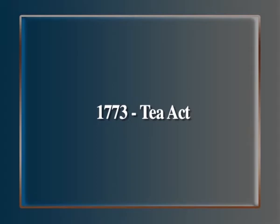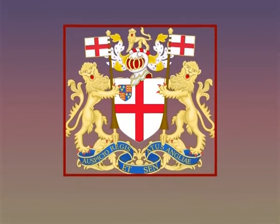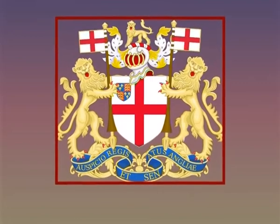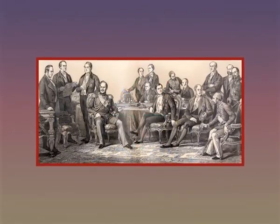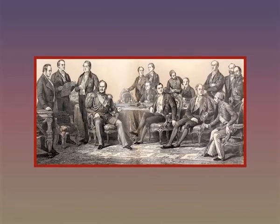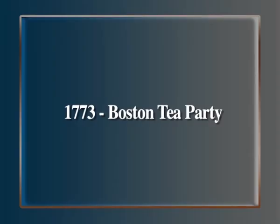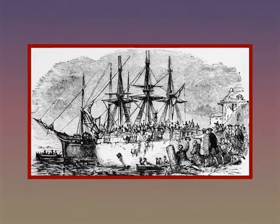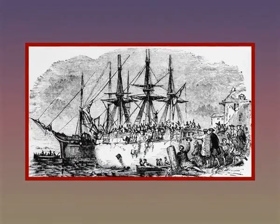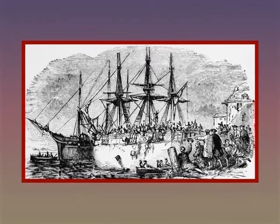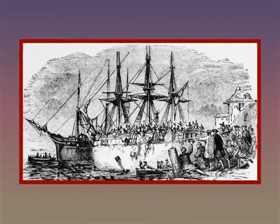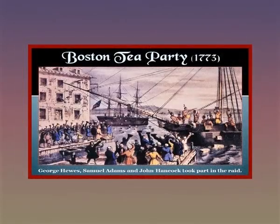1773: The Tea Act. To assist the failing British East India Company in India, the company was given a monopoly to trade tea in America. 1773: The Boston Tea Party. A group of colonists disguised as Indians dumped tea overboard from three ships in Boston Harbour. This is more of a symbolic act.